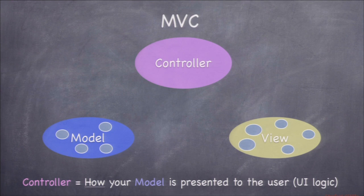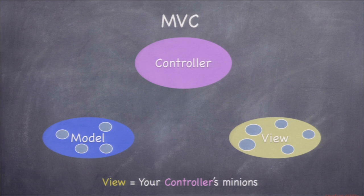The stuff in the view is pretty generic UI elements. The stuff in the controller is very specific to how your UI works. And the stuff in the model is completely independent of how your UI works. Doing MVC right is about knowing where things go, but also about how to communicate between these three camps.